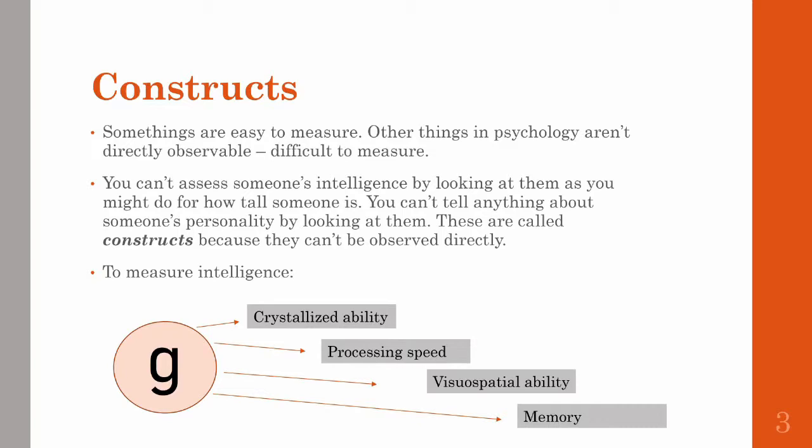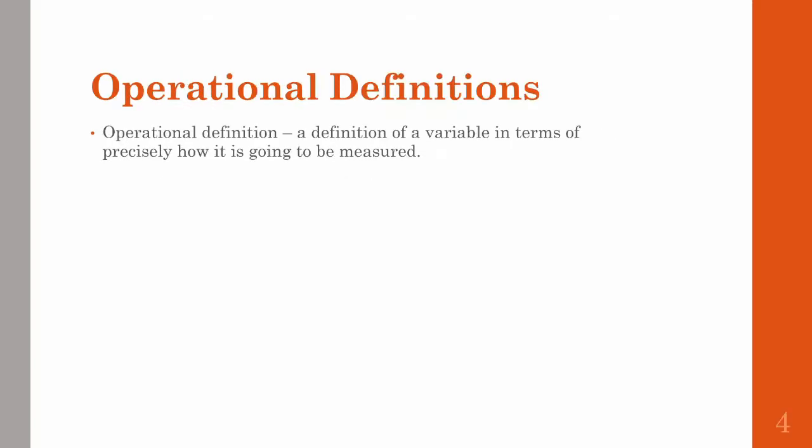With conceptual definitions of constructs, you can specify relationships or correlations between different parts. You can say, I'm measuring general intelligence, and I know we measure these domains, and I'm pretty sure that if someone is good at physiospatial ability, I can be reasonably sure that they're also probably not so bad when it comes to processing speed. With measurements, we have to operationalize things. An operational definition is a definition of a variable, and specifically, how it is going to be measured.